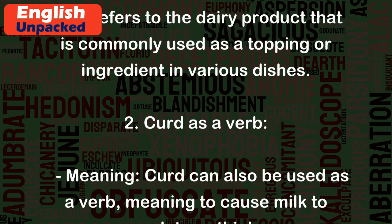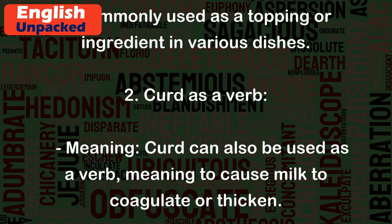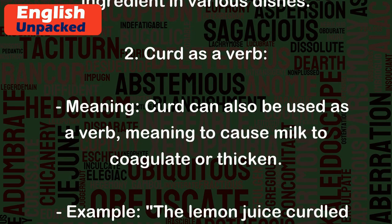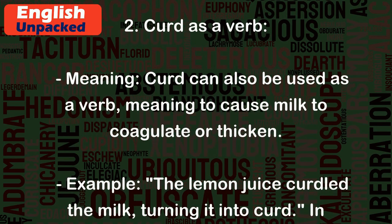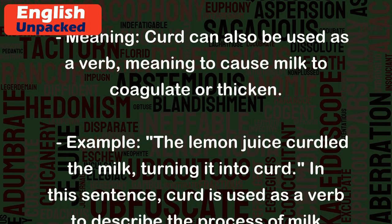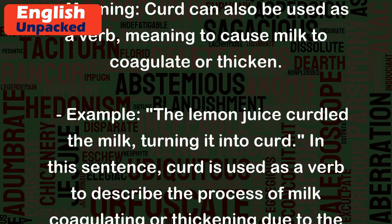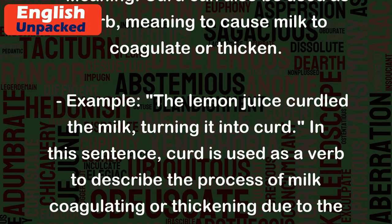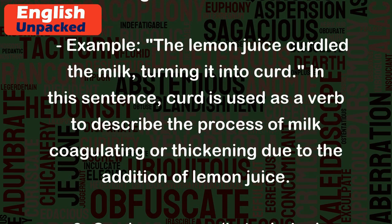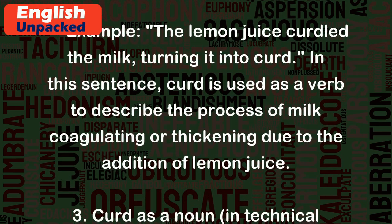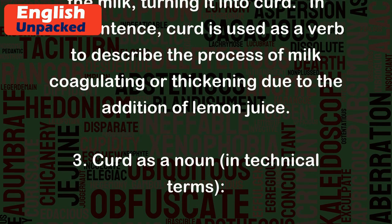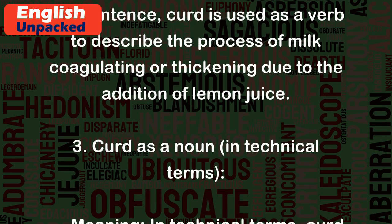2. Curd as a verb. Meaning: Curd can also be used as a verb, meaning to cause milk to coagulate or thicken. Example: 'The lemon juice curdled the milk, turning it into curd.' In this sentence, curd is used as a verb to describe the process of milk coagulating or thickening due to the addition of lemon juice.